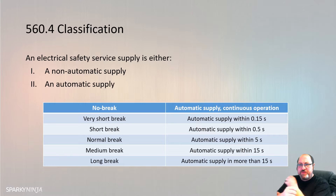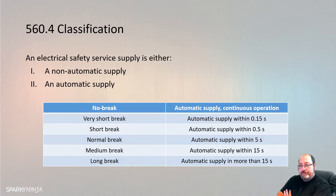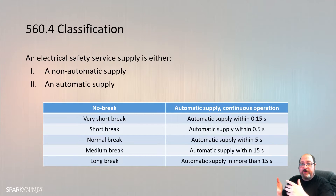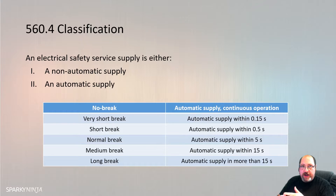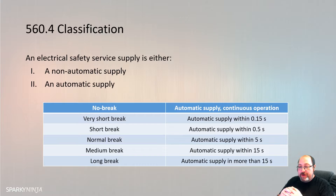I touched on this briefly in the previous video. 560.4.1 states that an electrical safety service will either be a non-automatic supply, which is initiated by an operator, or an automatic supply, where it's independent of an operator. For an automatic supply, the question is how automatic - so there is a changeover time to consider. We have 'no-break', which is an automatic supply producing a continuous supply within specified conditions during the transition period, for example regarding variation of voltage and frequency.